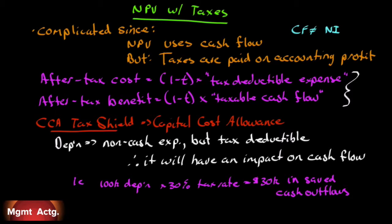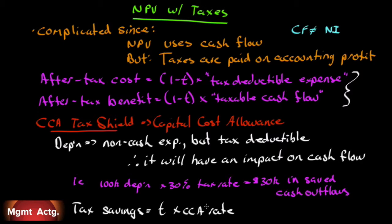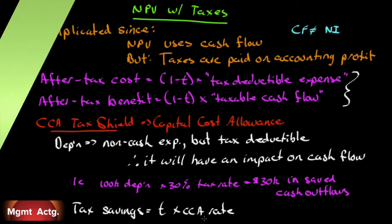Our tax savings equals our tax rate times the CCA rate. There's our 30% tax rate on the $100,000 depreciation. That $100,000 might have been a result of a CCA rate of 40% on a $250,000 asset. To know how much we're saving, we need to know how much our CCA allowance is for that year, and T will be the tax we would have paid if we didn't have that. Let's go into this tax shield a bit more because it's a bit more complicated.